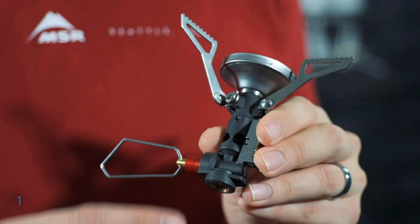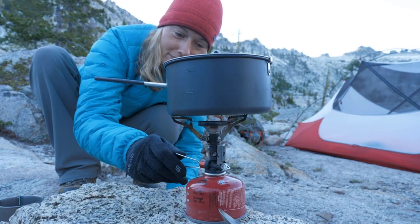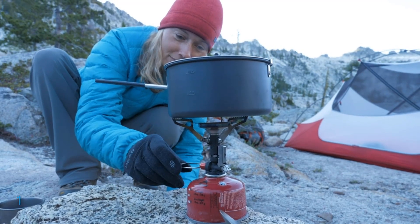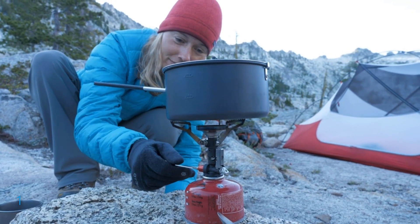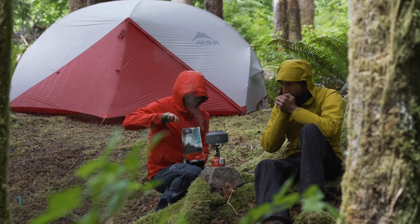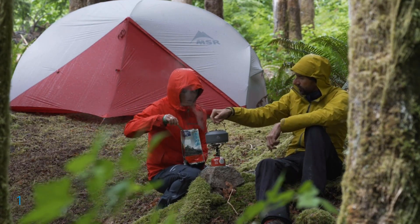we gave the Deluxe model an internal pressure regulator. This regulator allows the stove to maintain fast boil times across a range of temperatures. We wanted the stove to work well on cold mornings or when your canister might be running low on fuel. Because of the built-in regulator, the Deluxe model makes an excellent choice for three-season adventures.